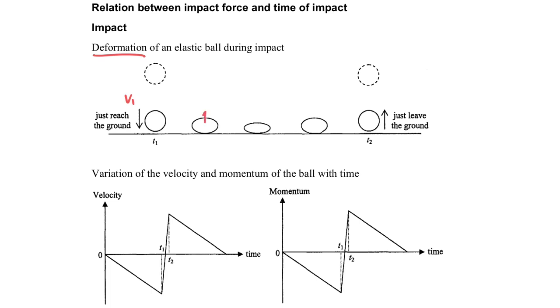So let's consider this again. When an object falls down onto the ground, when it's just reached the ground, for example we say the speed is v1, and then when it's touched on the ground,